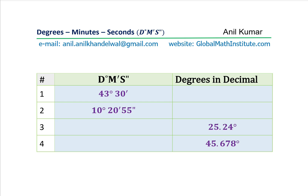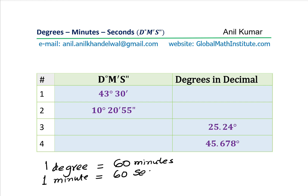In short: one degree is equal to 60 minutes, and one minute is equal to 60 seconds. Combining the two, we can also say that one degree is equal to 60 times 60, or 3600 seconds.